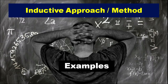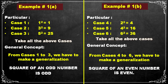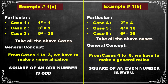Now we will go through some examples of inductive method. The general case: the square of an odd number is odd. I want to prove this general case by using particular examples. Case one: 1² = 1. Case two: 3² = 9. Case three: 5² = 25. Here, 1, 3, 5 are odd numbers. Squaring these numbers, the answer also comes as an odd number. From cases one, two, and three, we make a general conclusion: the square of an odd number is odd.